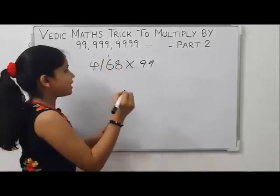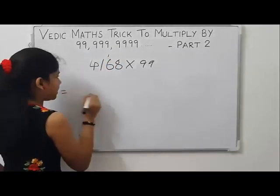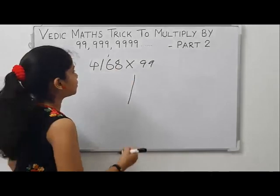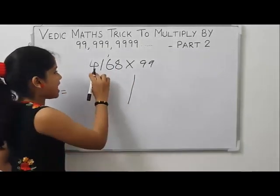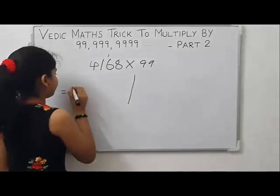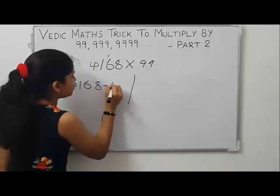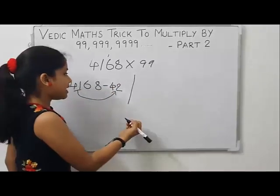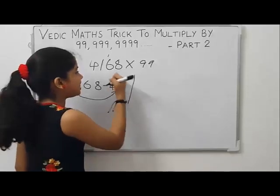Put a mark here to make the number of digits equal to the number of nines. Now put a partition here to separate the LHS and RHS part. To get the LHS part, subtract the next number of 41 from 4168. That is 4168 minus 42 — the next number of 41 is 42. To get the RHS part, find the complement of 68.